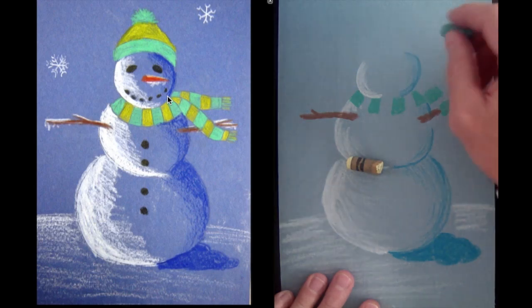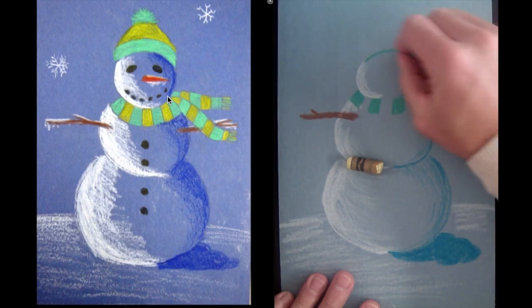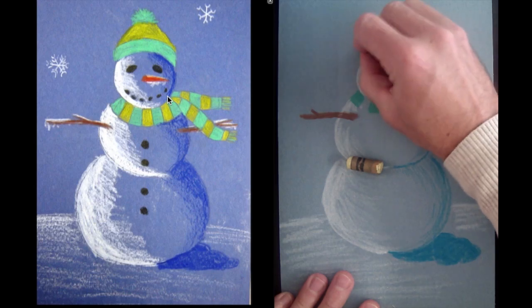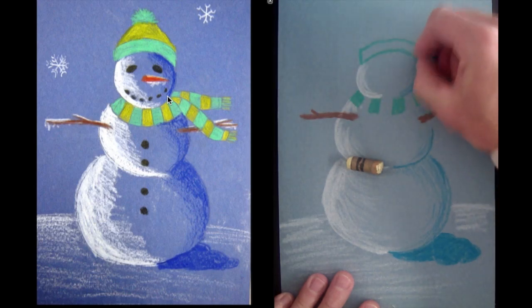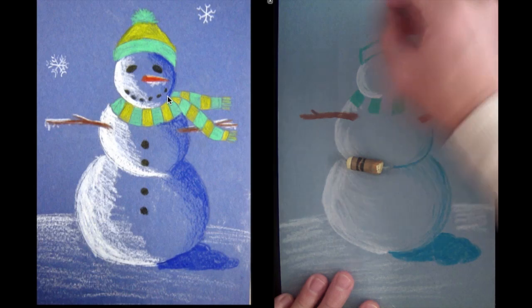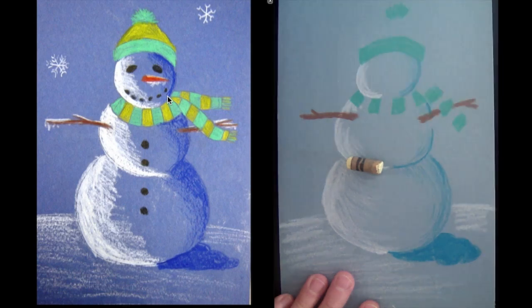And his hat's the same way. It's got a green band and a green ball on top with yellow in the middle. I like that fluffy ball on his hat.